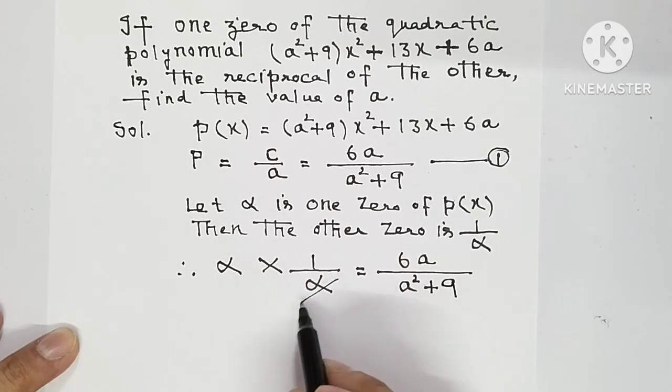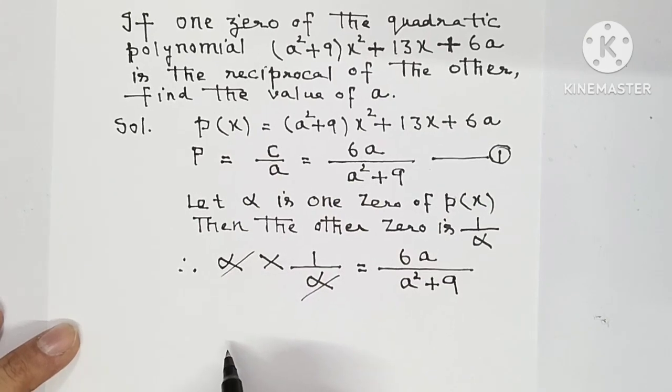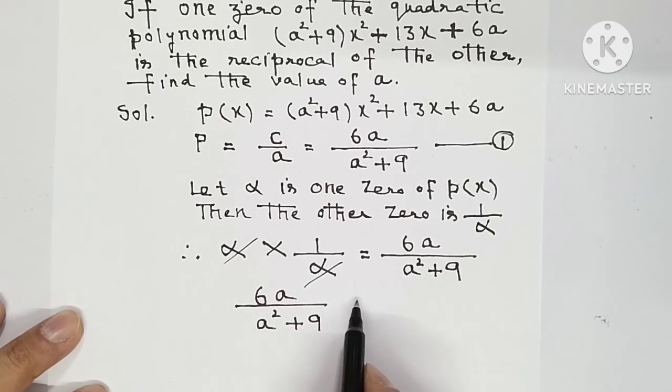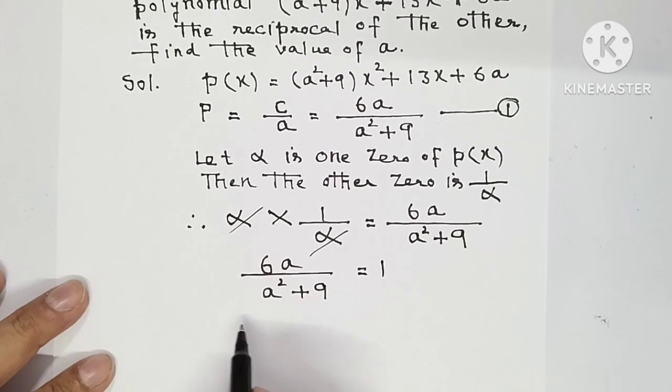Alpha alpha cancel. So you will get 6a upon a² + 9 equal to 1. Now solve. Cross multiply: a² + 9 is equal to 6a.